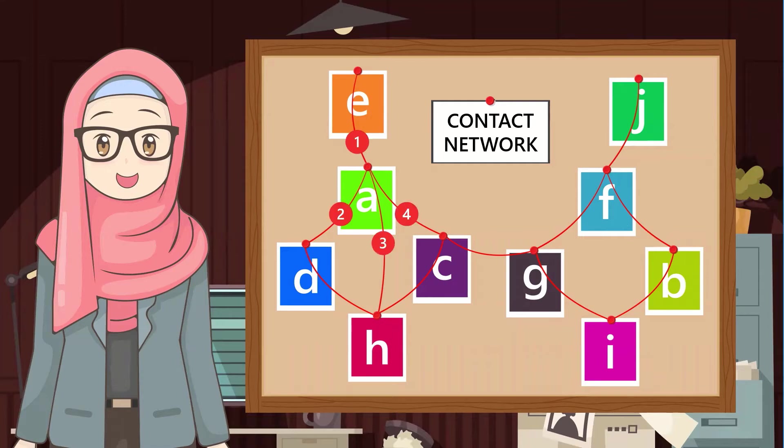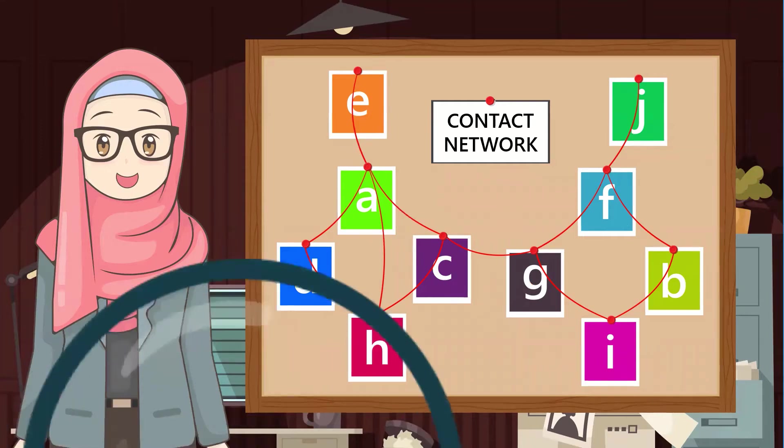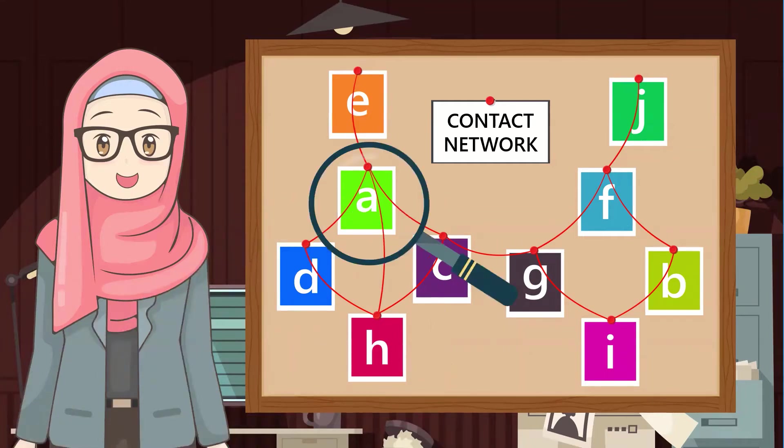One, two, three, four. Yes, A has the most contact. A is the super spreader then, right? But is the number of contacts the only thing that matters? Let's look at the bigger picture.